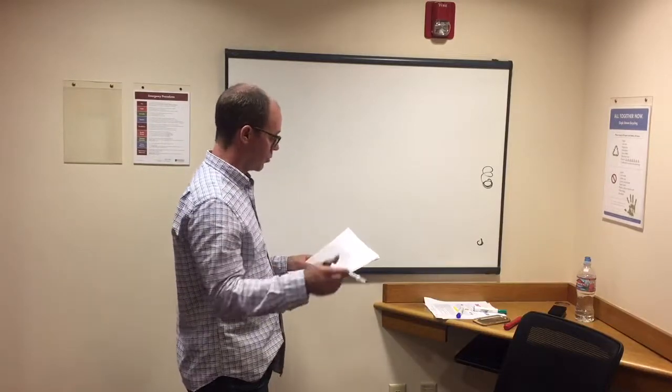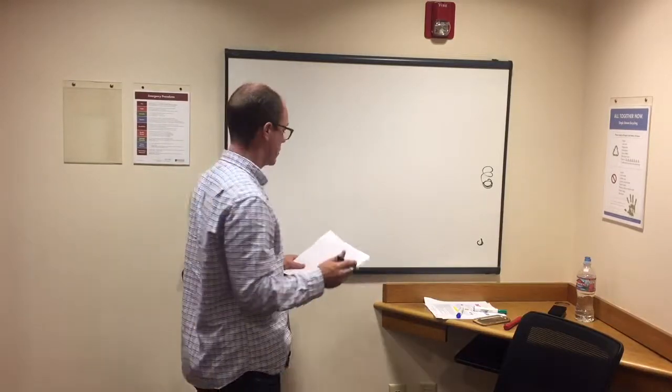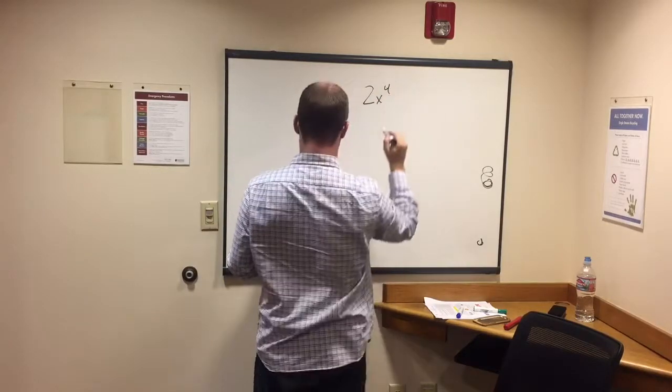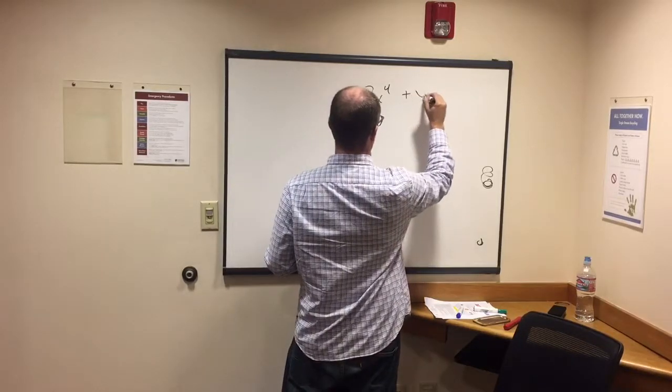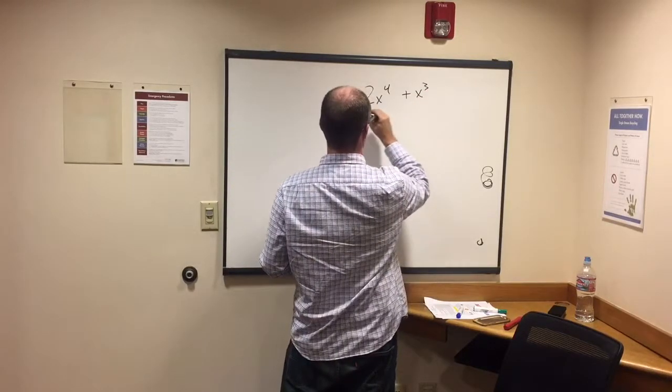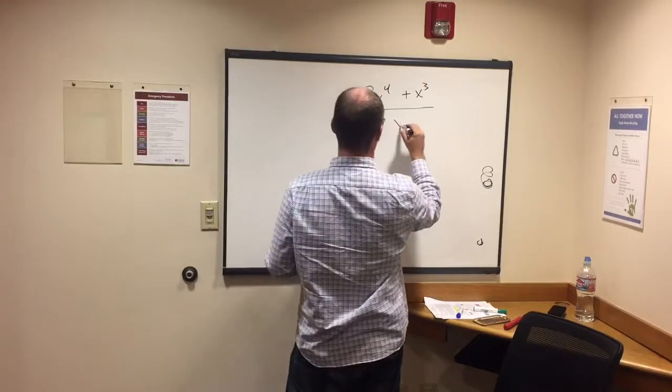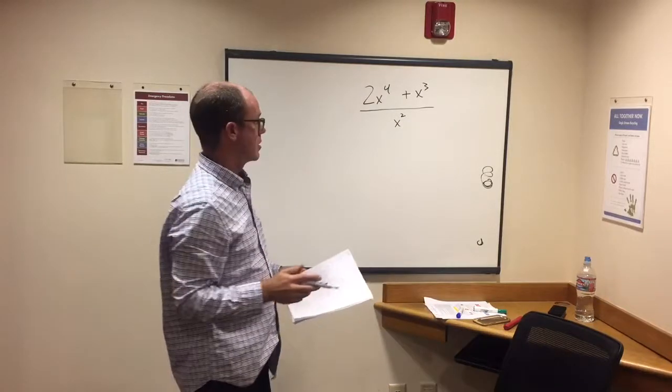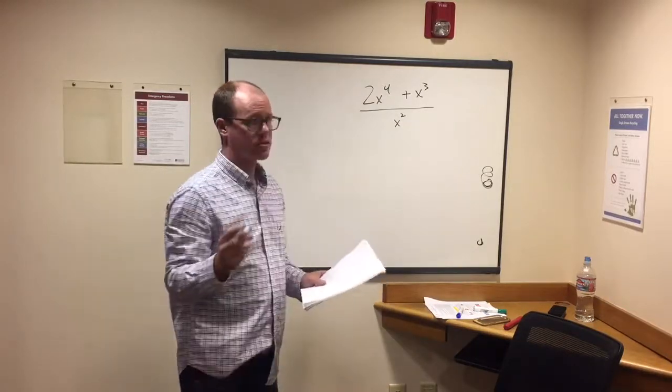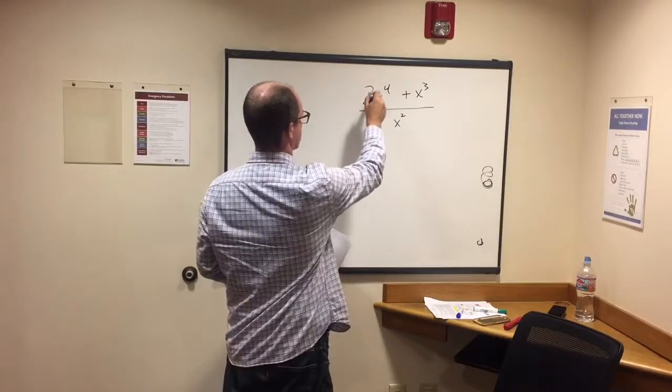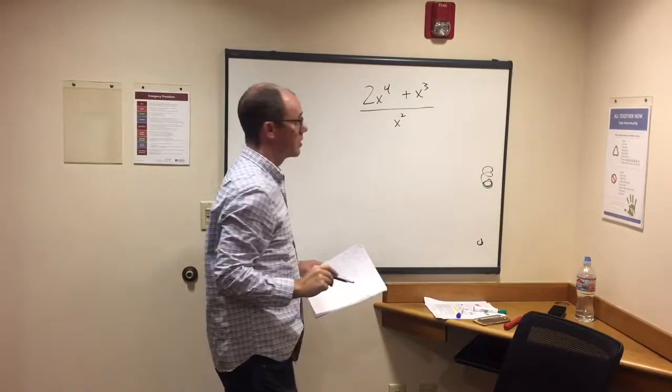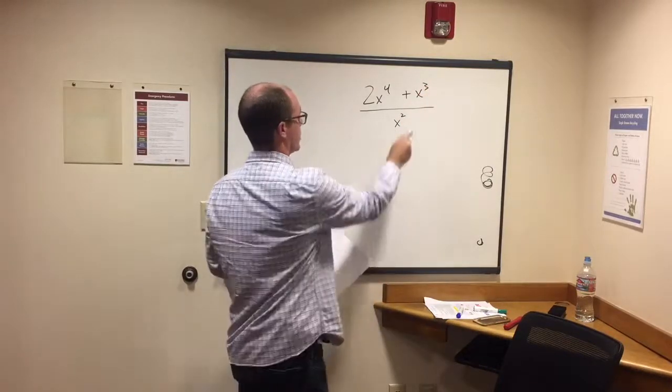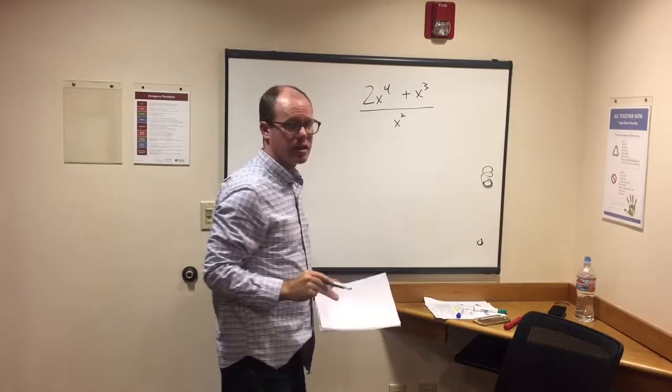So first let's look at one with the distributive, where there's division. So we'll have 2x to the 4th plus x to the 3rd all over x squared. So what we need to know here with the distributive property for division is that we're going to divide this thing on the left by the denominator, the number on the bottom, and the one to the right of the addition sign also will divide by x squared here.